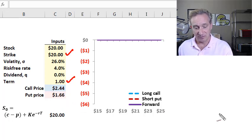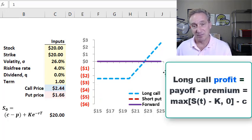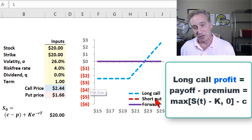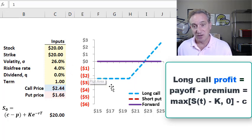I think an elegant way to understand this is by way of the synthetic forward. Over here, I've started a profit diagram with the long call, illustrated in the dashed blue. This is a profit, not a payoff, meaning it includes the receipt or payment of the upfront premium. At low future stock prices below the strike of 20, we have a net loss on the long call equal to the premium of $2.44.